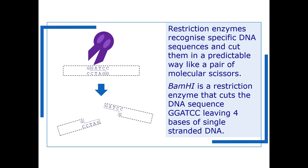BAMH1 is actually the restriction enzyme that we're going to use. It cuts the sequence GGA TCC and as you can see it leaves four base pair single-stranded DNA overhangs either end where it cuts the DNA.